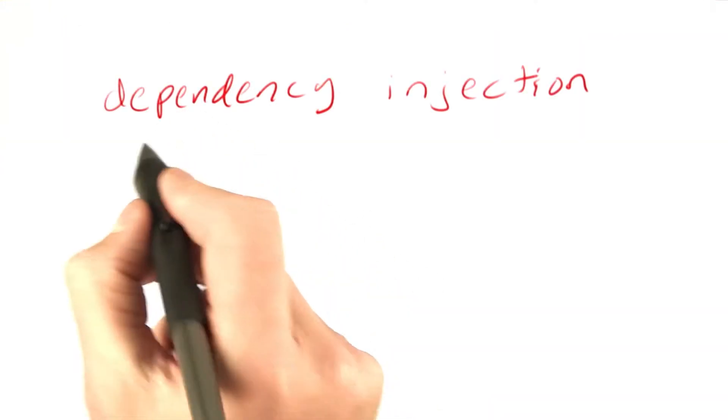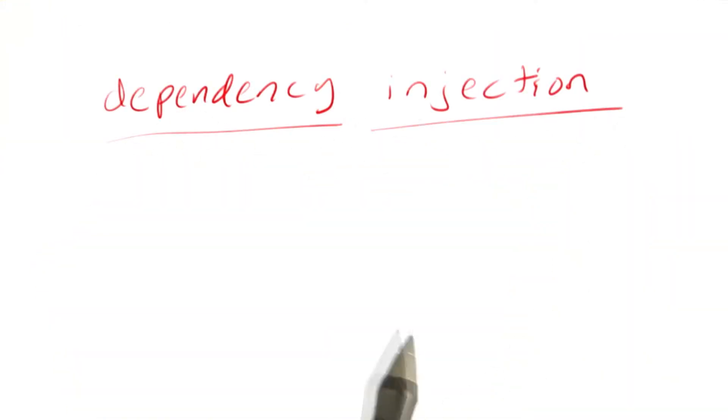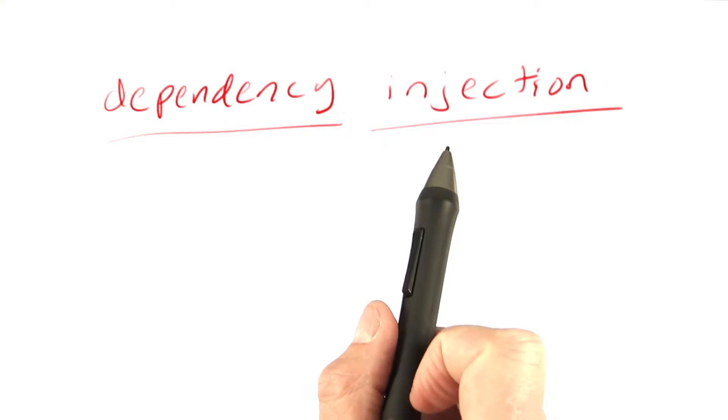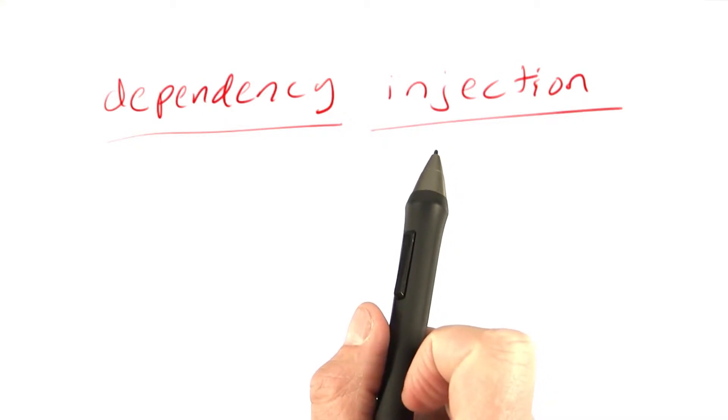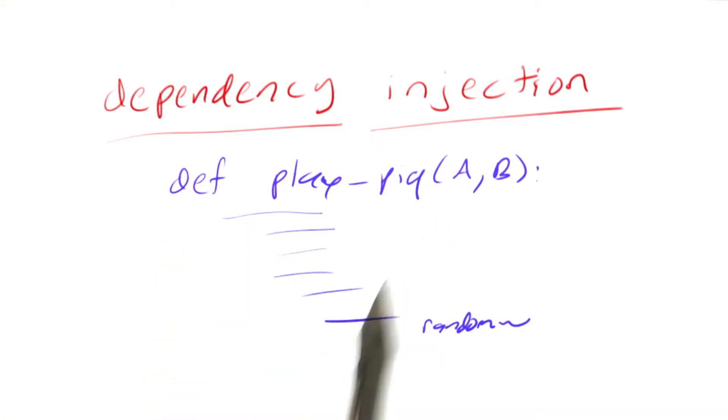This is an example of a concept called dependency injection, which has a rather scary and intimidating sounding name, but it's actually a pretty simple idea. The idea is we've got a function like this, a big complicated function, and way down somewhere inside there's something that we want to affect, something we want to monitor or track or change. Dependency injection says this function depends on this random number generator, so let's be able to inject that.